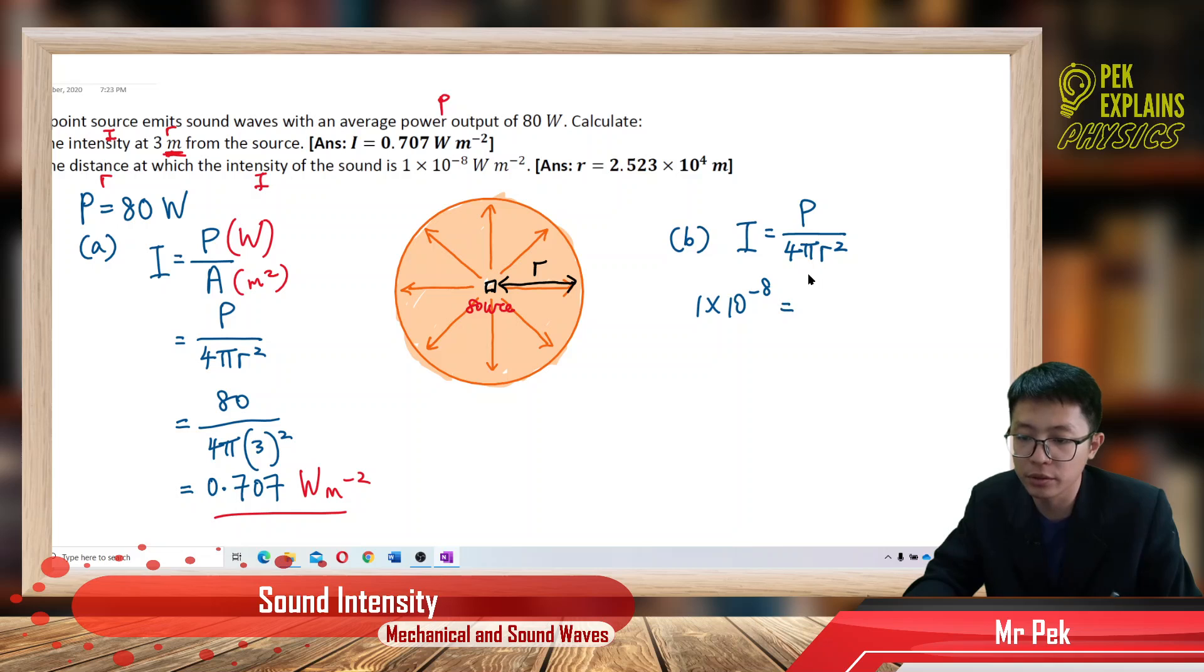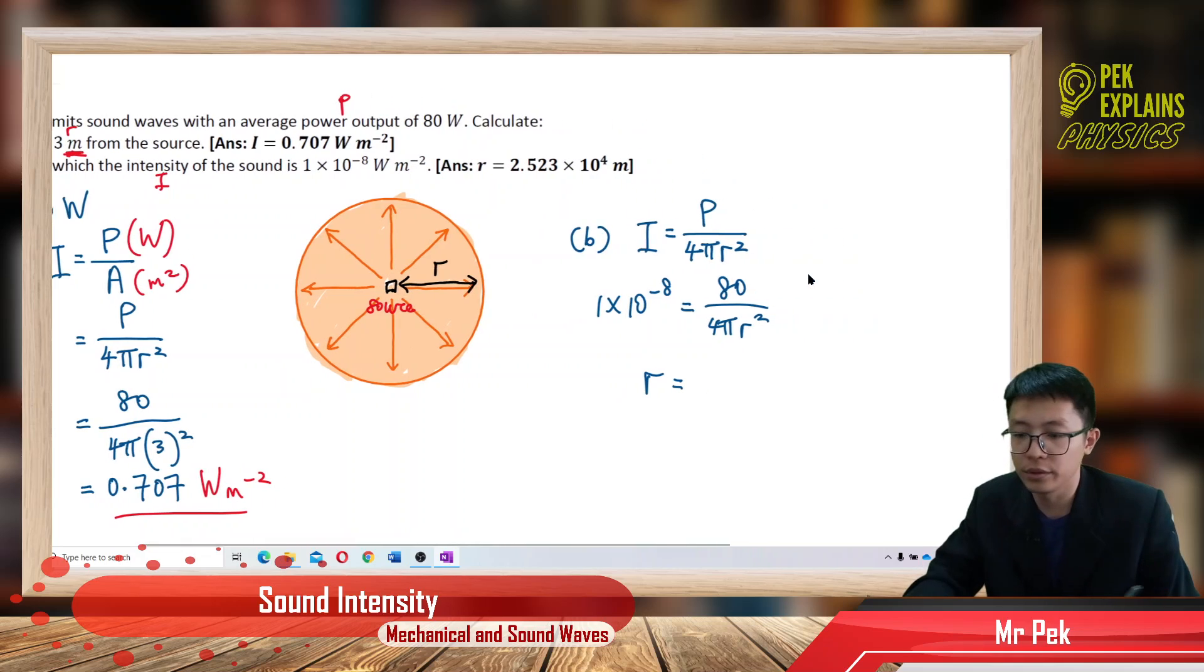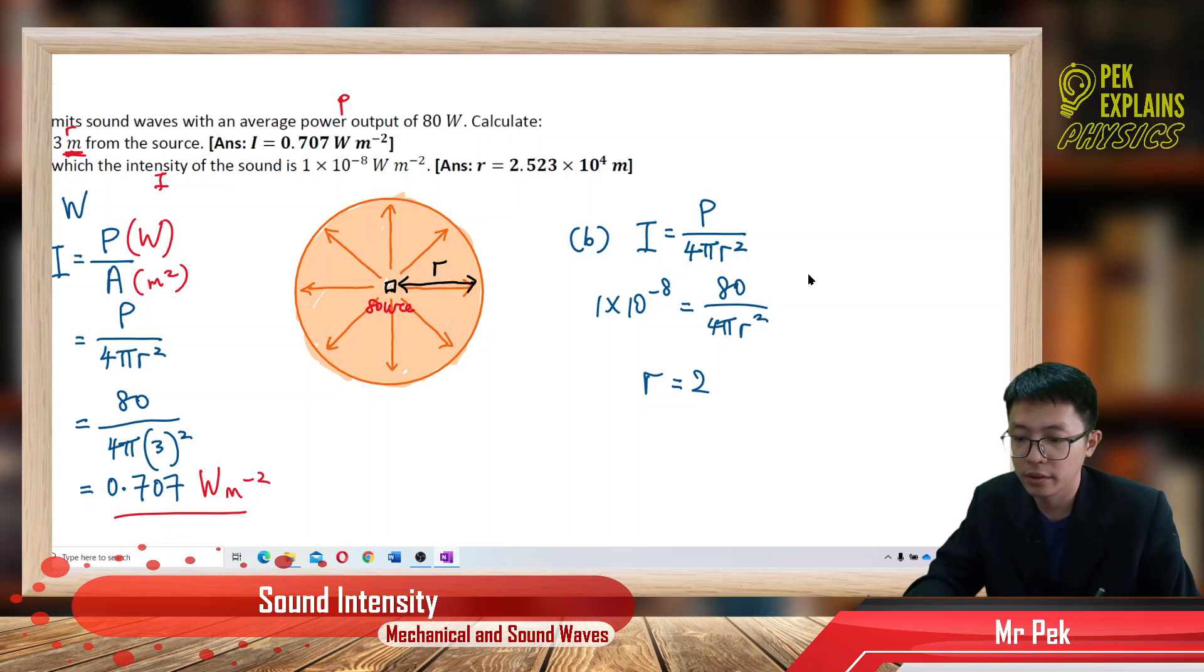Everything in SI units. My power is 80, over 4πR². So my R, taking the square root, I get the answer 2.523×10⁴ meters.